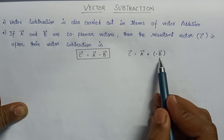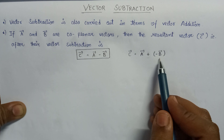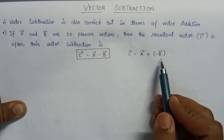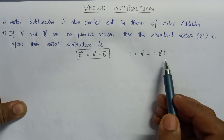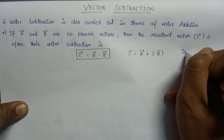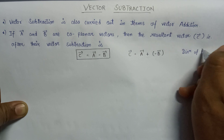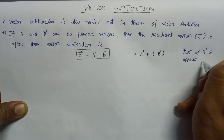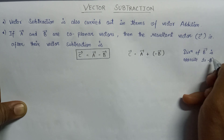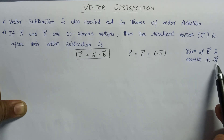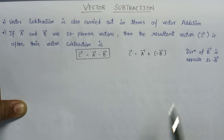Now let's talk about this minus B vector. Minus B vector is a vector whose magnitude is the same as that of B vector, but the direction of minus B vector is opposite to the direction of B vector. This is the basic difference between B vector and minus B vector — that is nothing but the direction. Now let us talk about the two rules for finding out the vector subtraction.